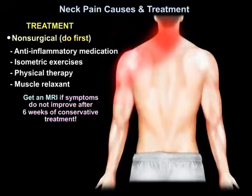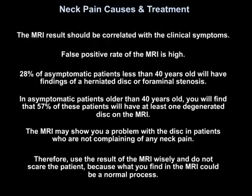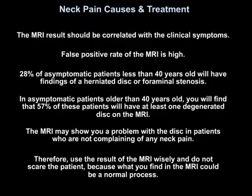Get an MRI if symptoms do not improve after 6 weeks of conservative treatment. The MRI result should be correlated with the clinical symptoms, as the false positive rate is high. 28% of asymptomatic patients under 40 years old will have findings of a herniated disc or foraminal stenosis, and in asymptomatic patients older than 40 years old, 57% will have at least one degenerated disc on MRI. Use MRI results wisely and don't alarm the patient, as findings may represent a normal degenerative process.